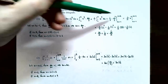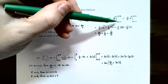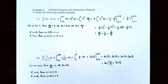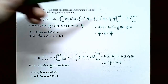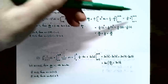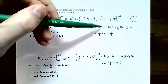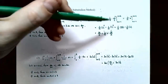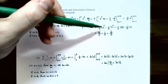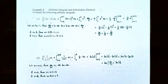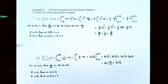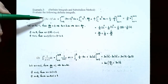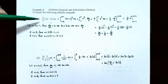Simplifying the antiderivative: one-third times u to the fifth divided by 5 is one-fifteenth u to the fifth. Evaluating at u equals 2 and u equals negative 1: plug in the upper limit first — one-fifteenth times 2 to the fifth — then subtract one-fifteenth times negative 1 to the fifth. Since 2 to the fifth is 32 and negative 1 to the fifth is negative 1, you have 32/15 minus (one-fifteenth times negative 1), which gives 32/15 plus 1/15 equals 33/15. That is the area under the curve y equals (3x minus 1) to the fourth power on the closed interval from x equals 0 to x equals 1.